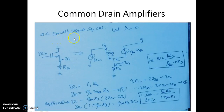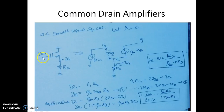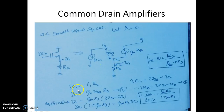Now we shall see the AC small signal equivalent circuit. Assuming lambda equals zero, we replace VDD by ground and remove the DC bias VGS. The input Vin is applied and the output is taken at the source terminal. Replacing the transistor by its small signal model — GM into VGS — we can write V0 equals I0 times RS, where I0 is the current GM into VGS. So substituting, V0 equals GM times VGS times RS.